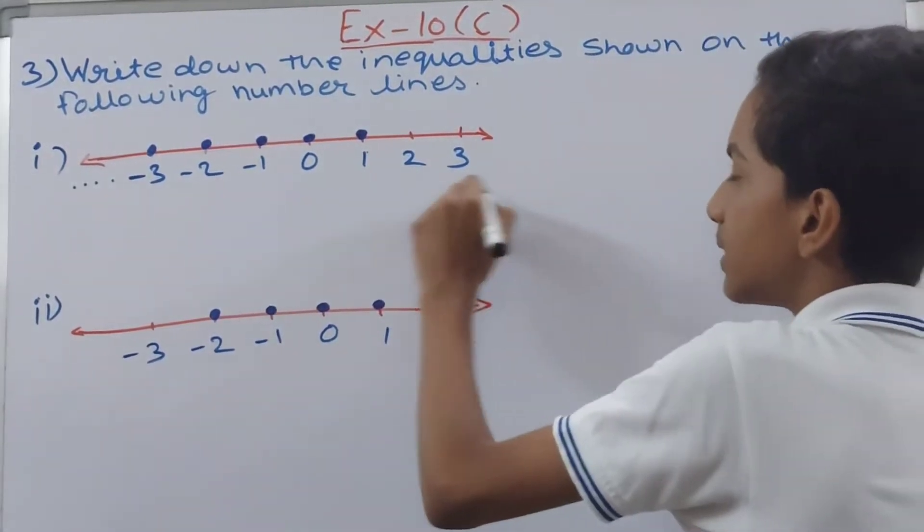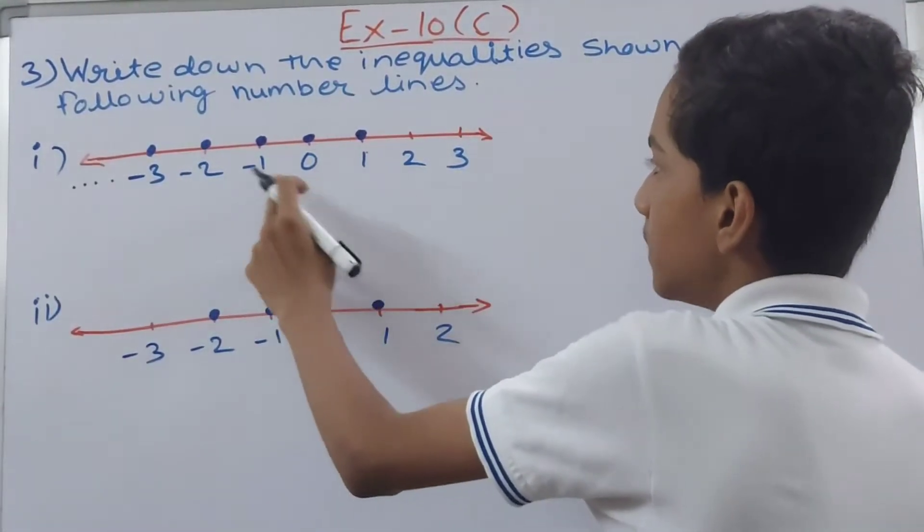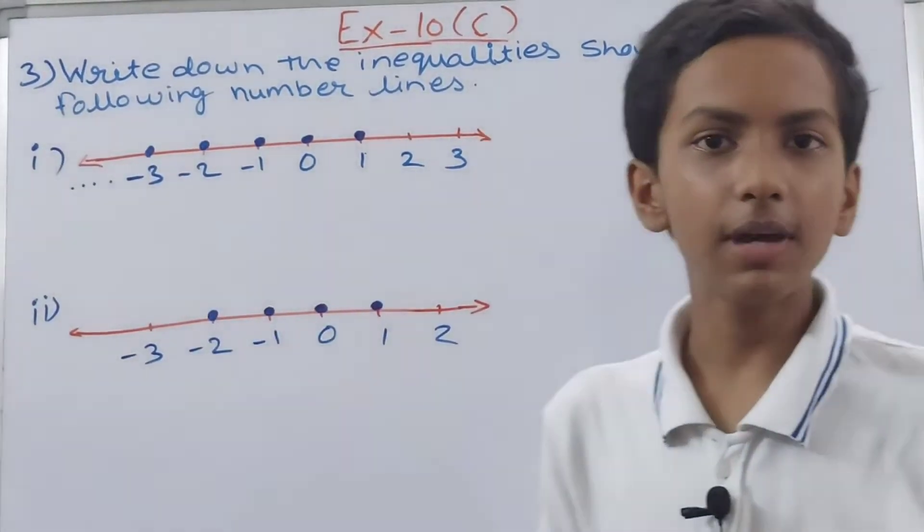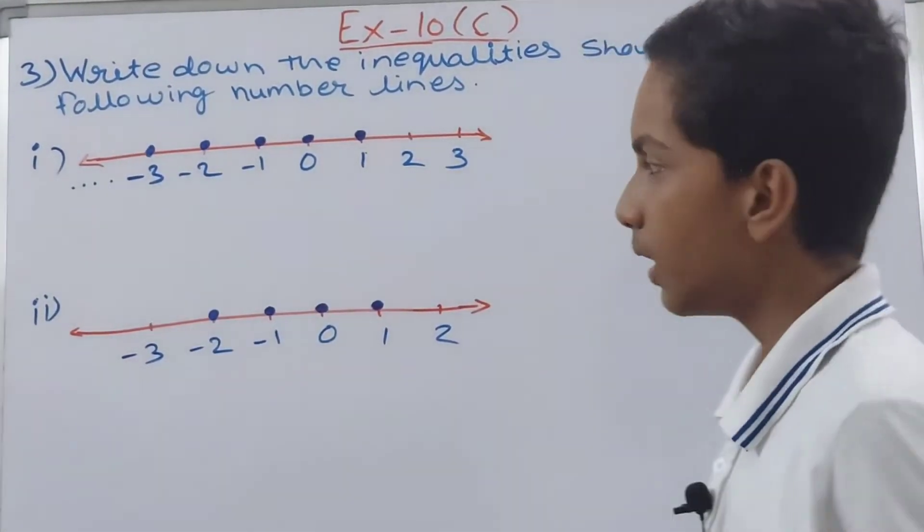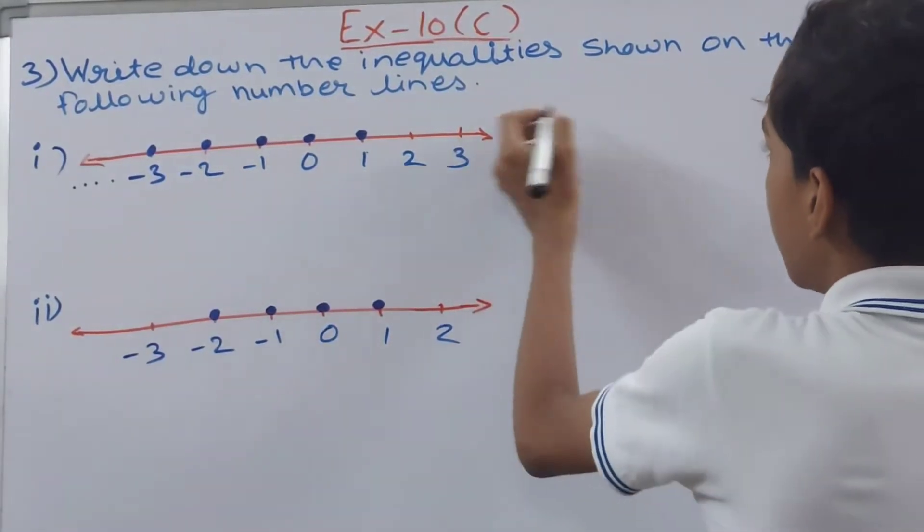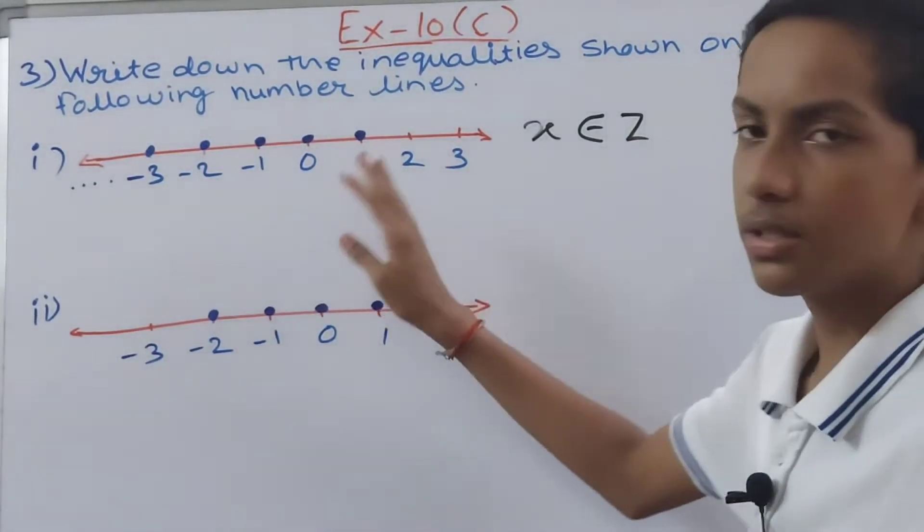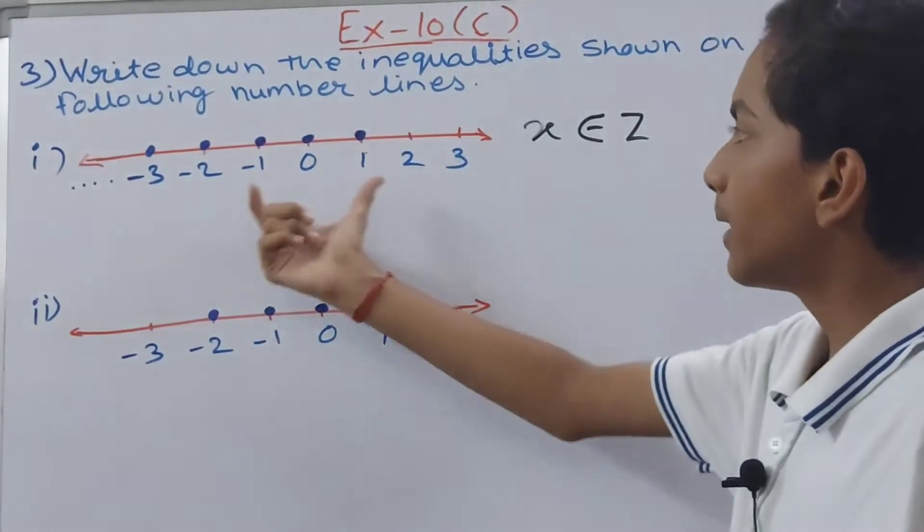First one, you see this over here. You can see 1, 0, -1, -2, -3 and so on are the numbers which represent the value of x. First of all you have to write that x belongs to Z, that is integers. This is important as well, you have to write this down.